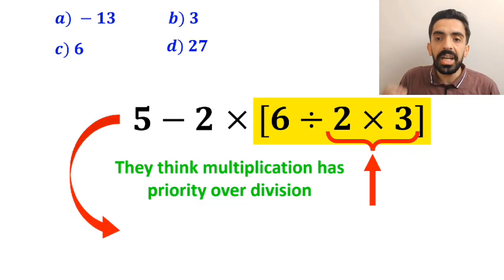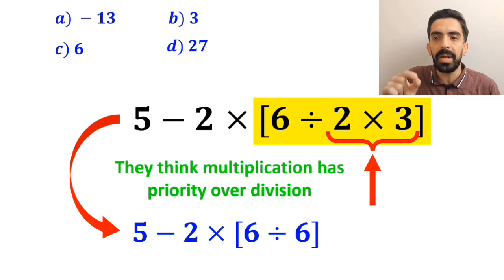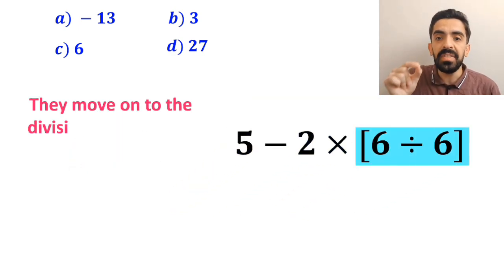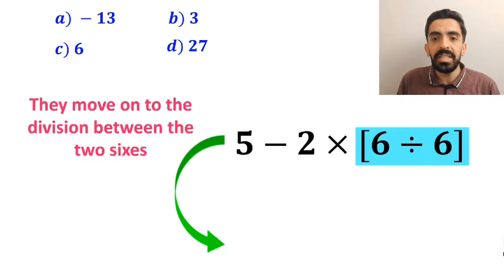So, instead of the entire expression, they write 5 minus 2 times 6 divided by 6 inside the brackets. In the next step, they move on to the division between the two 6s, which simplifies the expression to 5 minus 2 times 1.